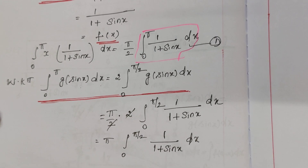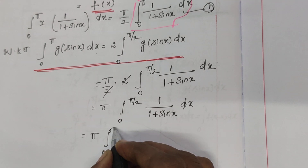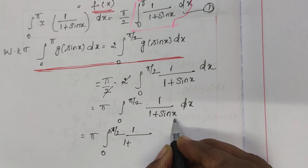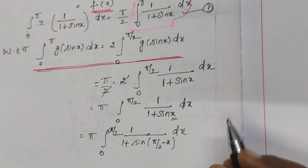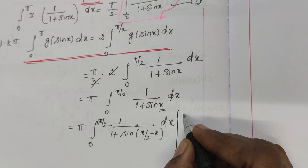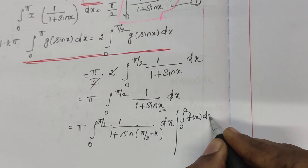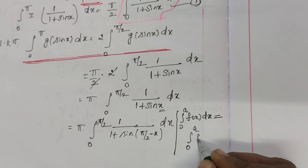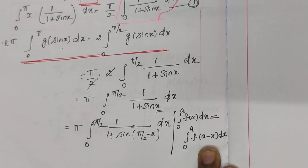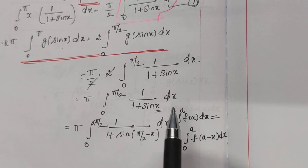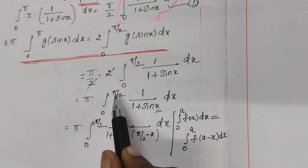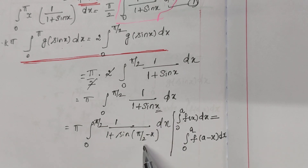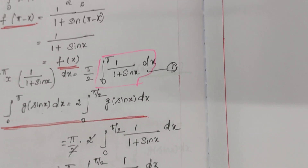This term equals π times the integral from 0 to π/2 of 1/(1 + sin(π/2 − x)) dx. We apply the property that the integral from 0 to a of f(x) dx equals the integral from 0 to a of f(a − x) dx, replacing x by (π/2 − x) since here a = π/2.